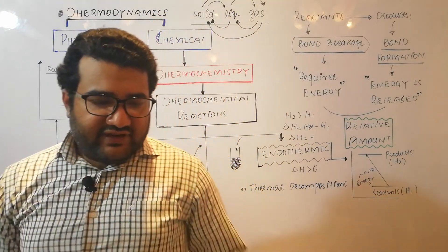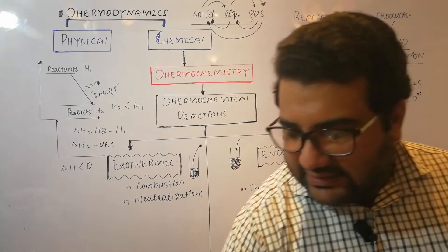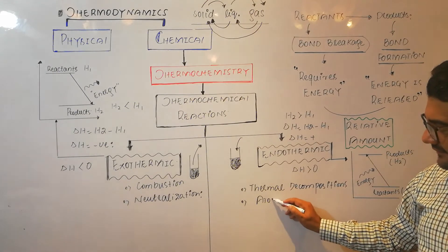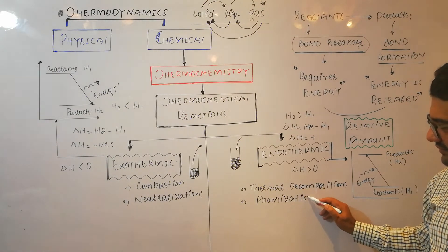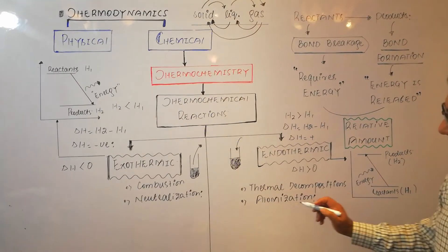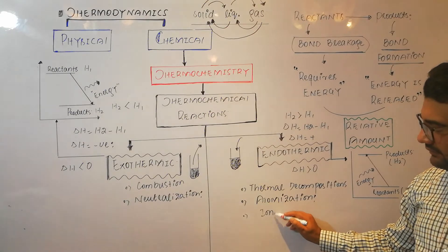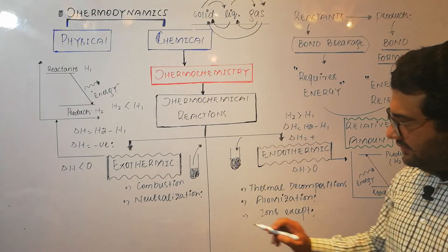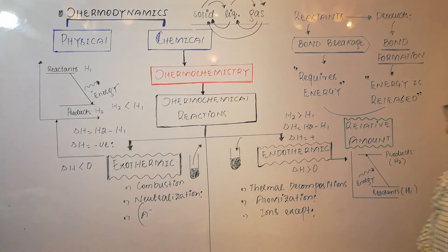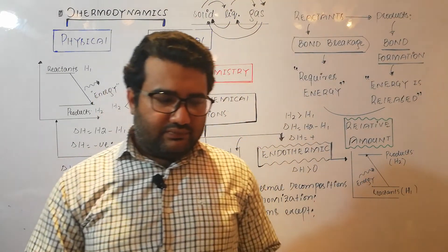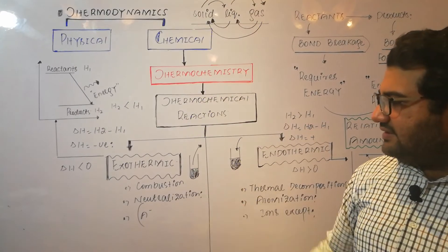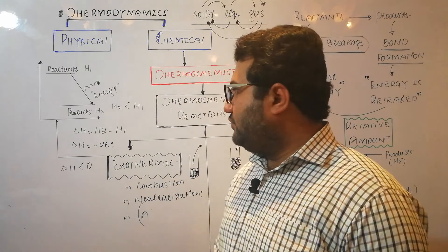In case of endothermic processes, atomization — which means converting a molecule into atoms — is always endothermic. Additionally, the production of all ions is endothermic, except for one: the uninegative ion, whose production is exothermic. Ionization is also basically an endothermic process. For more details on why the uninegative ion is exothermic, you can refer to the video lecture on ions.